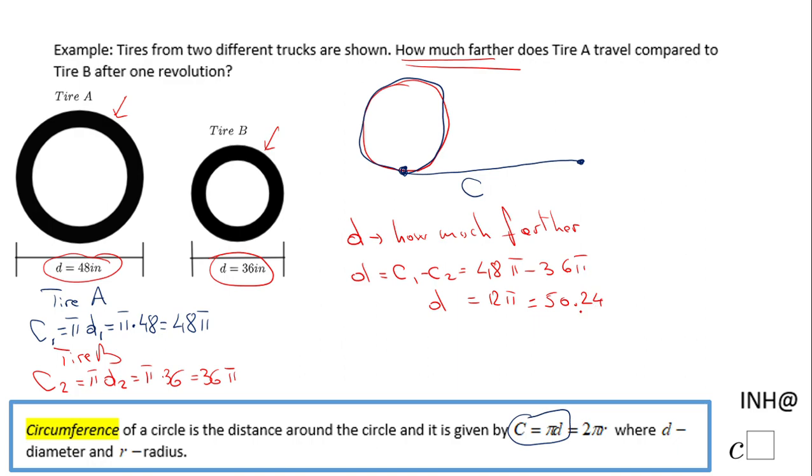So on one revolution, Tire A is going to cover 50.24 more inches than Tire B. You can use this thinking and approach to see how much further Tire A travels after 100 or 1000 revolutions. If you enjoyed this video, don't forget to click the like button and come back to C Square for more help. Thank you!